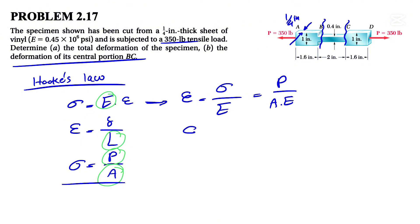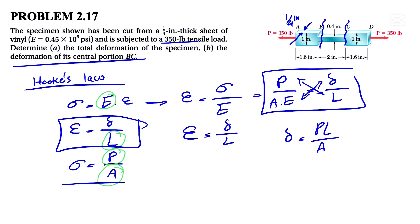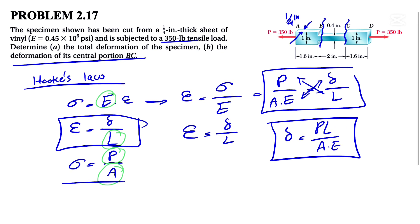Also we know this is equal to what we have in this second part, deformation over L. So this will be equal to deformation over L. From these two, if we cross multiply, we can see that deformation is equal to PL over A times E. So that's the formula that we need to memorize.